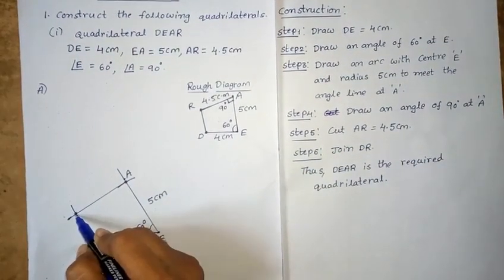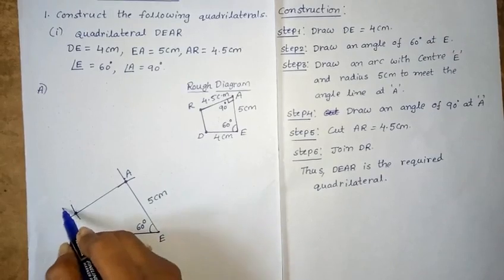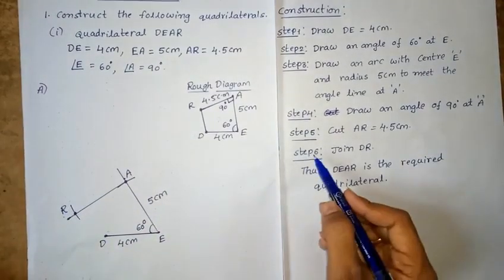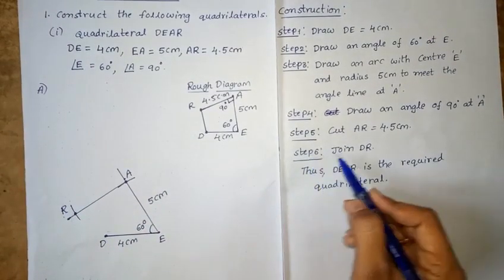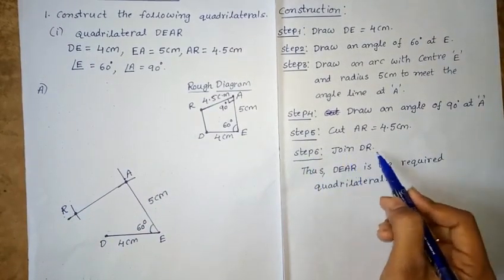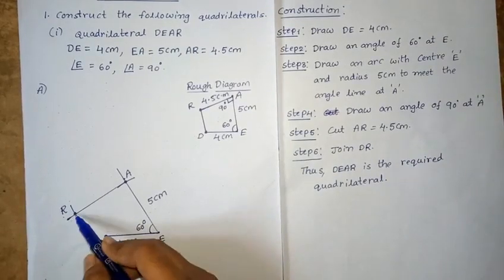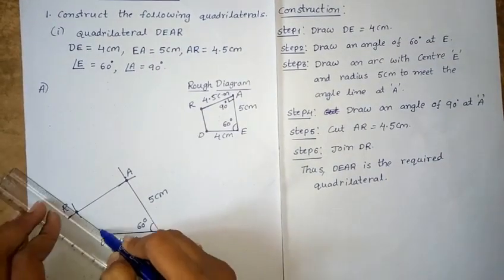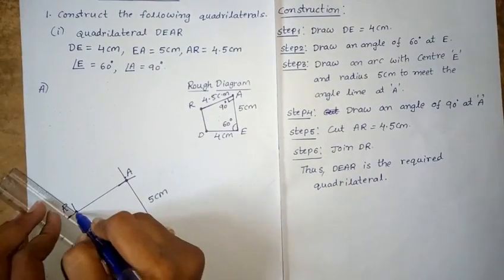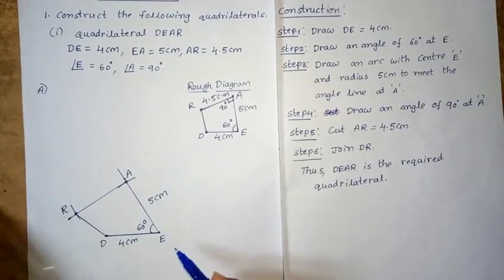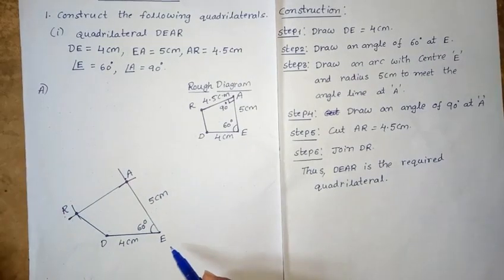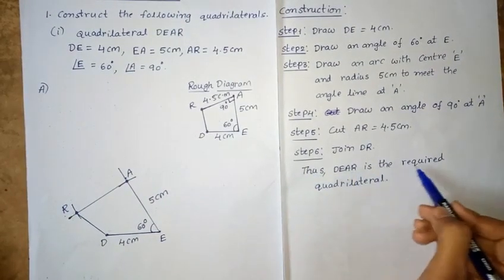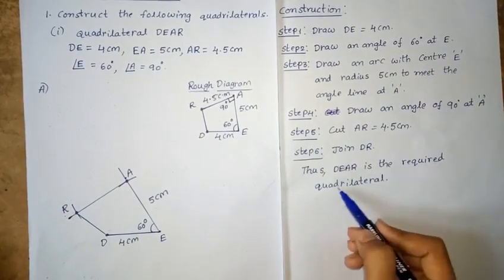Now mark point R at 4.5cm from A on the angle line. Next, 6th step: join D to R. Join point D to point R to complete the quadrilateral. Thus, D-E-A-R is the required quadrilateral.